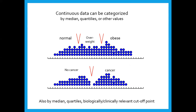You can categorize continuous data as a categorical variable, as is often done with body mass index, and it makes it more intuitive to understand. But it is a little controversial — some statisticians will say you really shouldn't categorize data that is continuous, because what if there's a difference between people in the low-normal range and those in the high level? Maybe they have different risk profiles but are lumped into one category as 'normal.' You can use the median or quartiles, or a biologically or clinically relevant cutoff point.